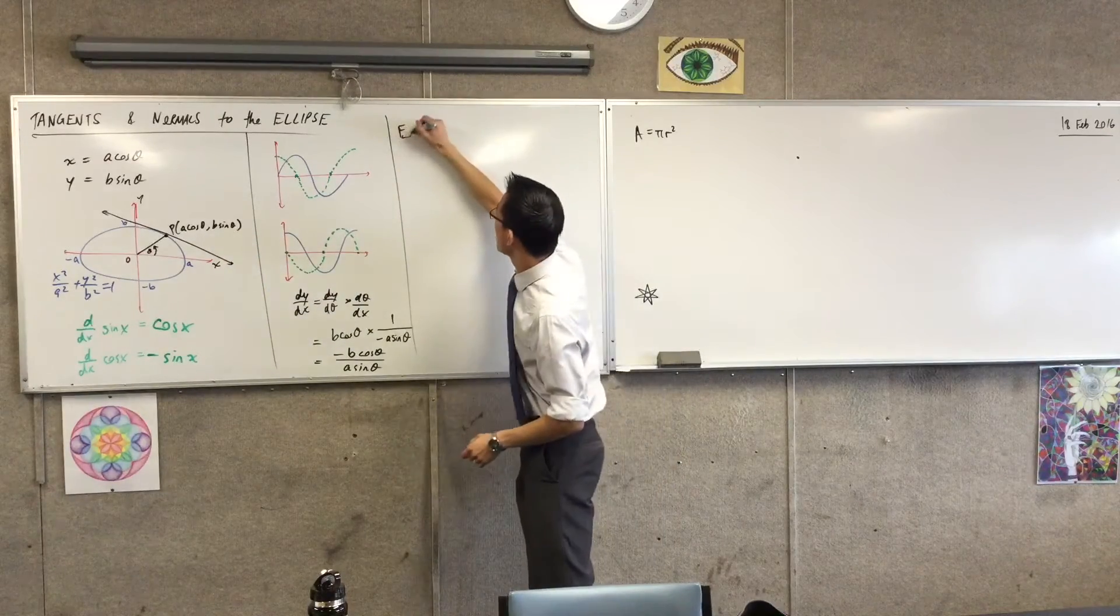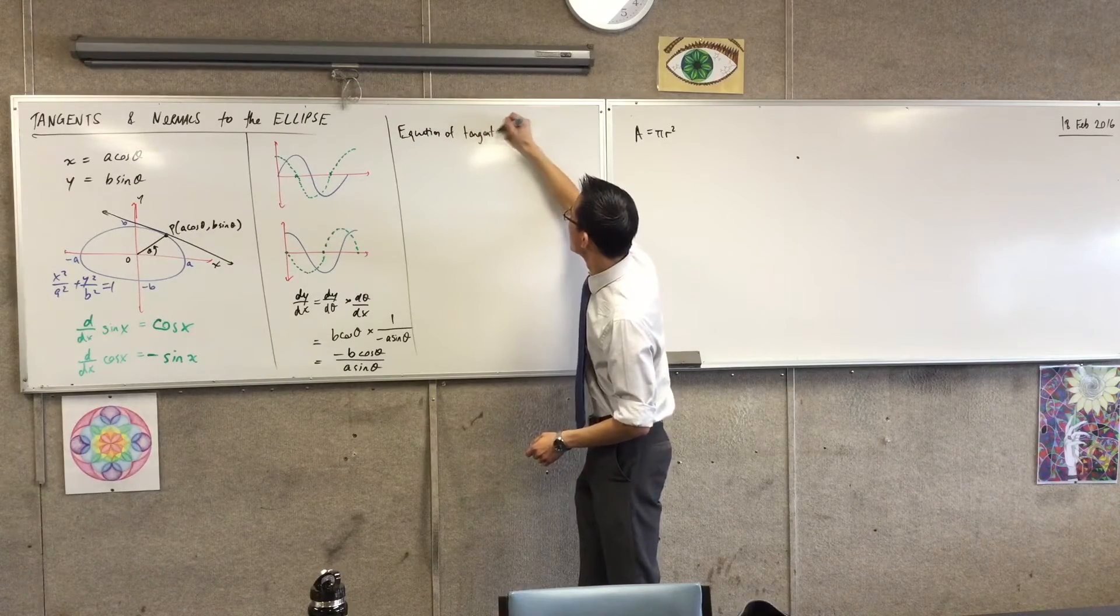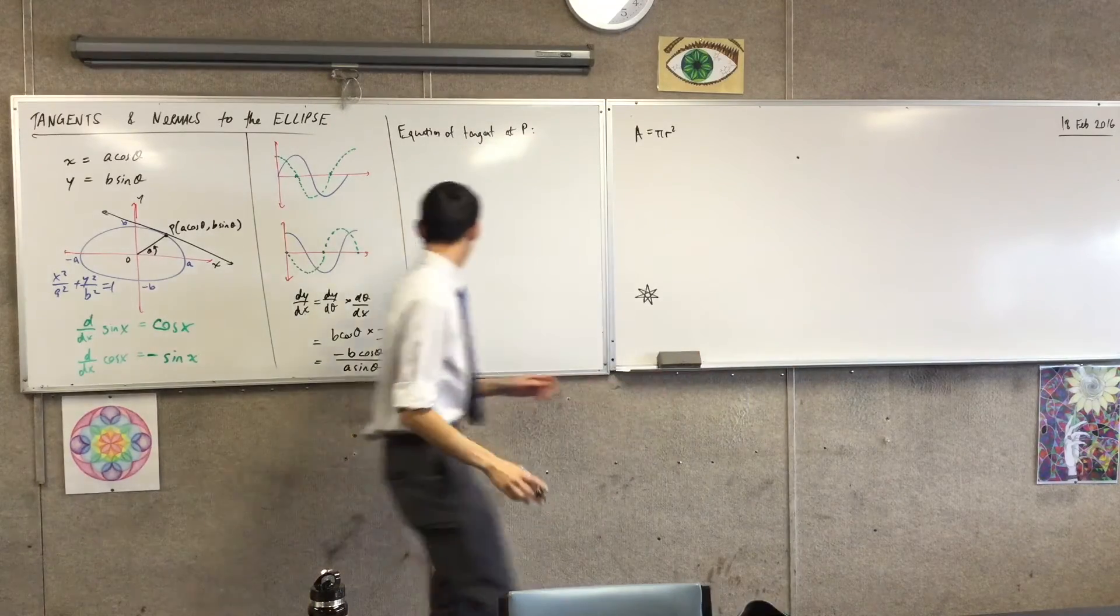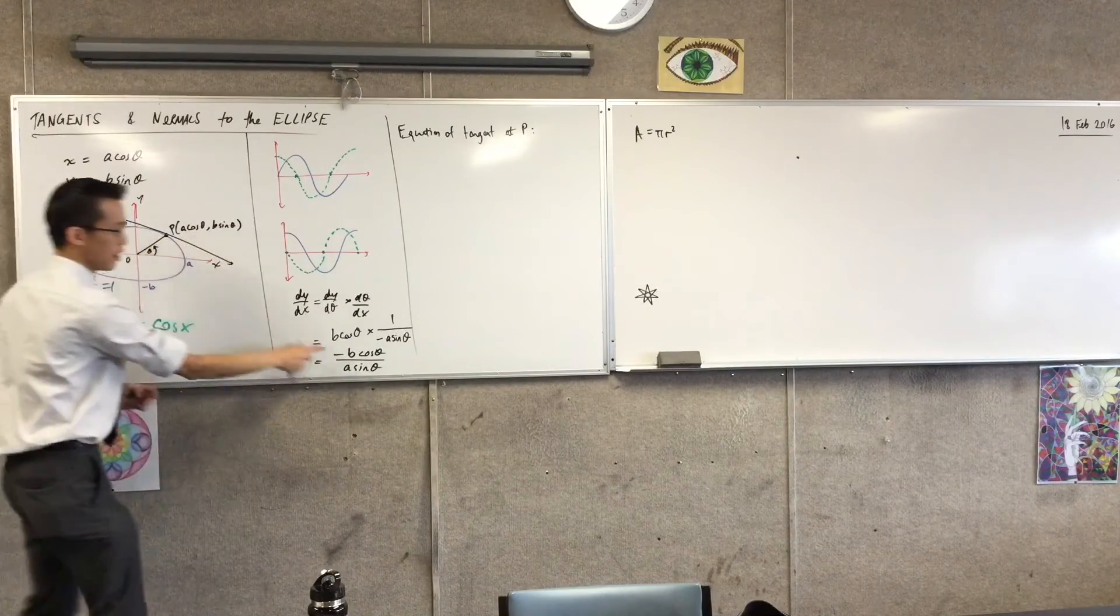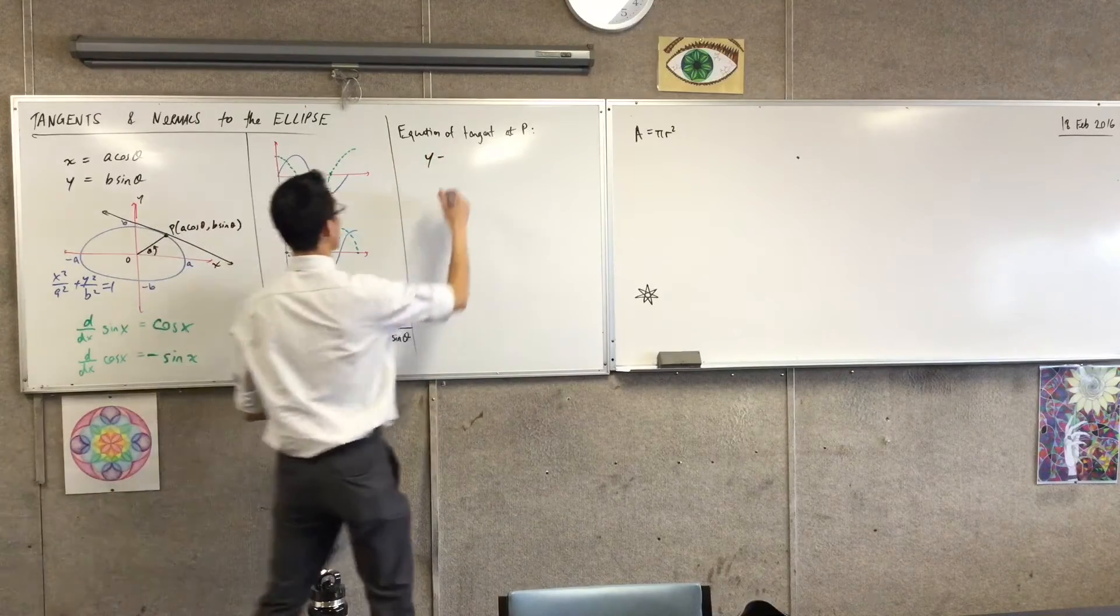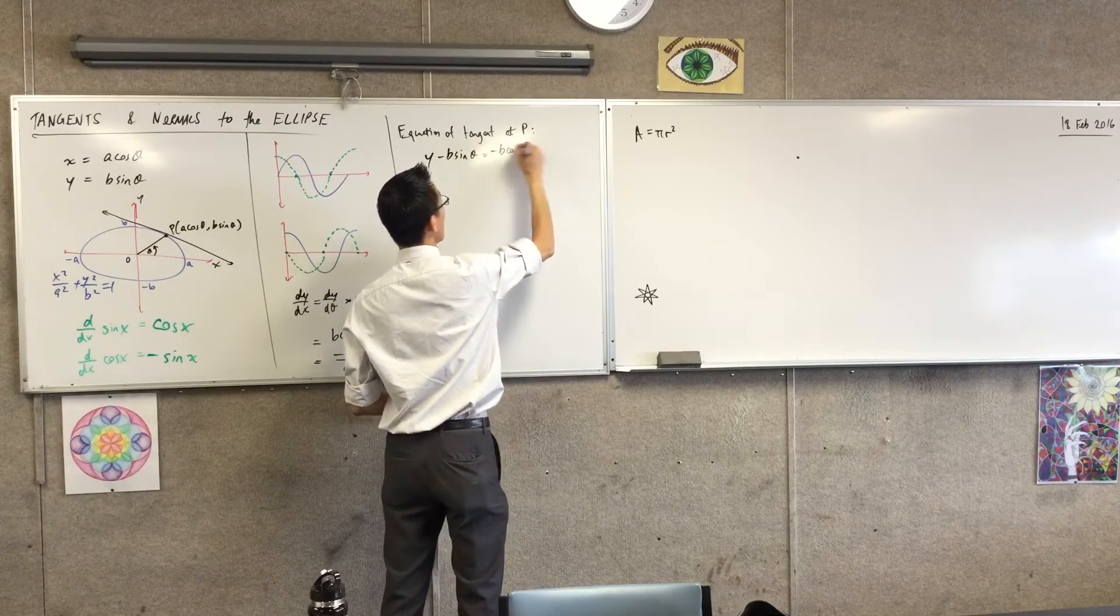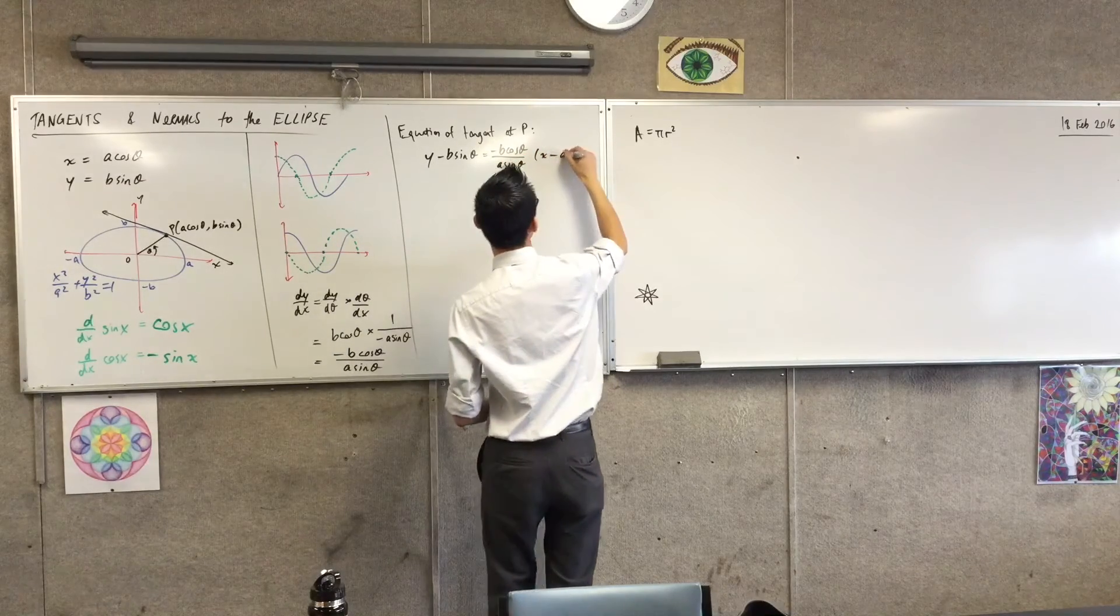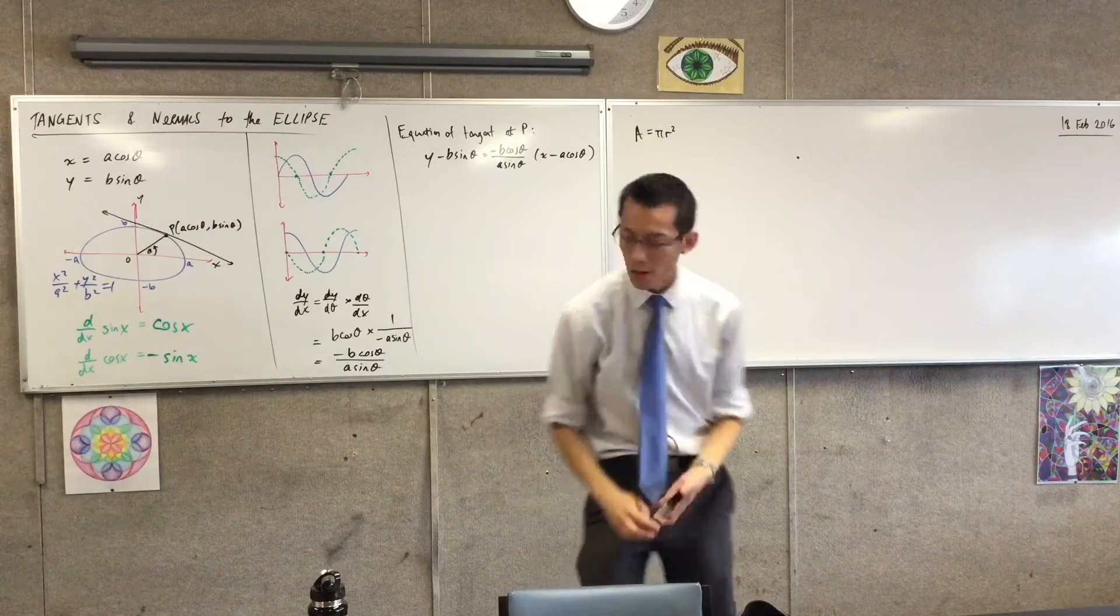The equation of the tangent at P is simply y minus y₁ equals m times x minus x₁. And I know what all of those pieces are. One, two, three. So let's just quickly get that down. y minus...